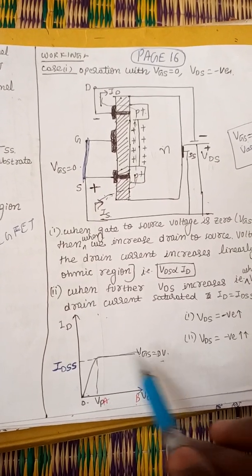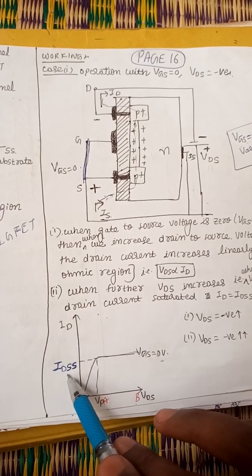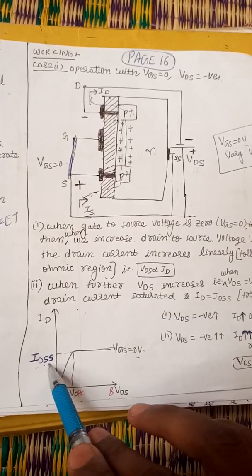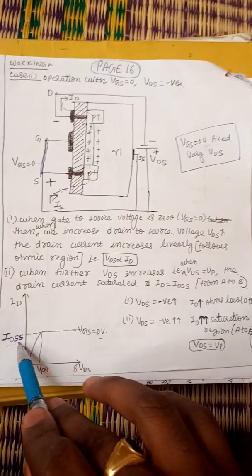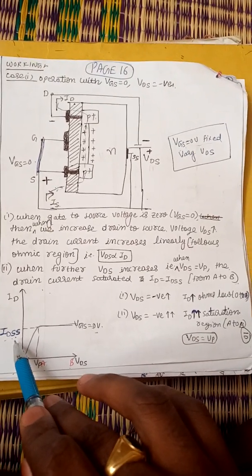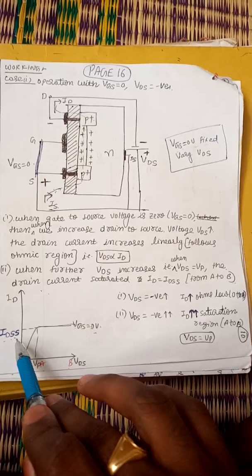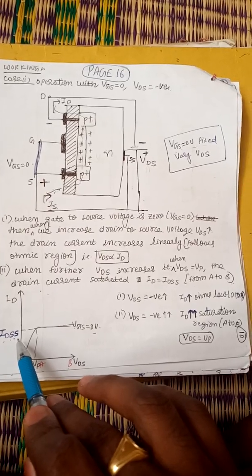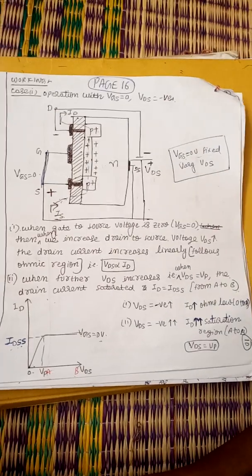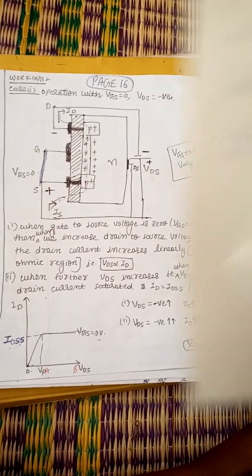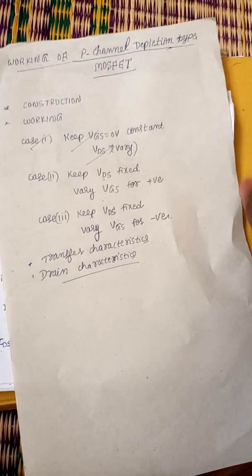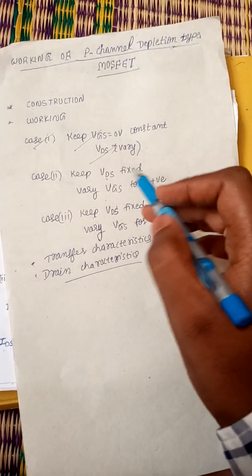When Vgs is equal to 0, the drain current is called IDSS. This concludes the first case where Vgs equals 0 and VDS is varied.